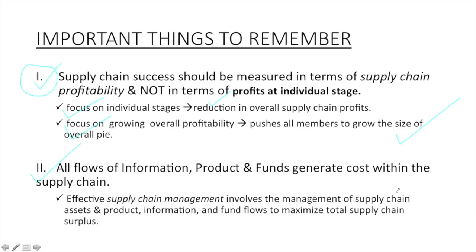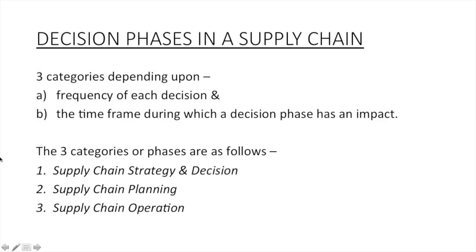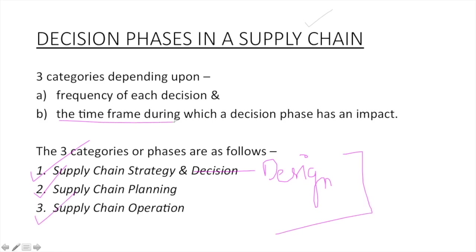Now let's see what does it take for a company to decide what the supply chain structure should look like and how it should operate its supply chain. There are three decision phases in a supply chain: one is supply chain strategy and design, second is supply chain planning, and third is supply chain operation. All these phases depend upon the timeframe during which a decision phase has an impact and the frequency of each decision.